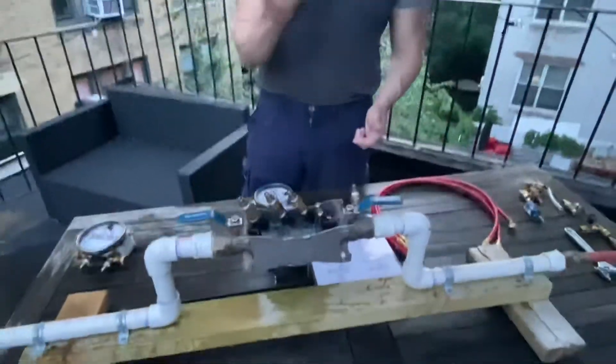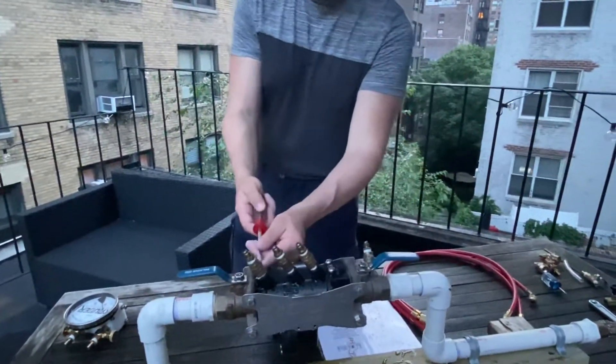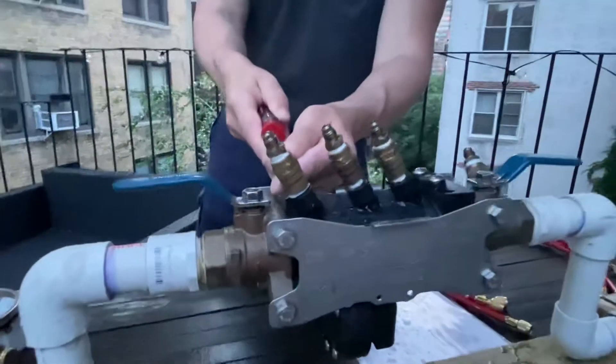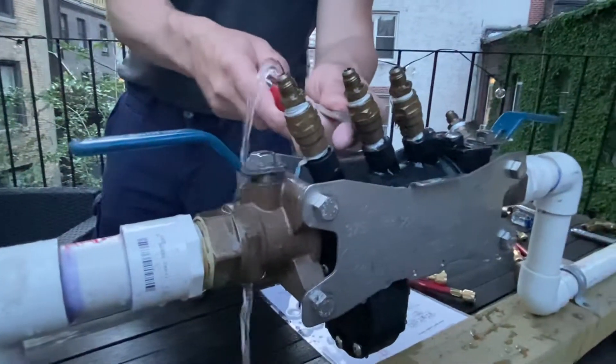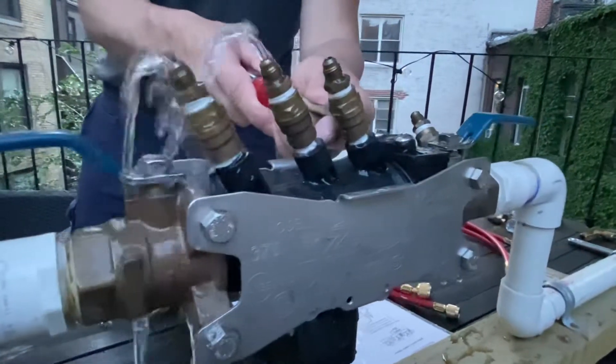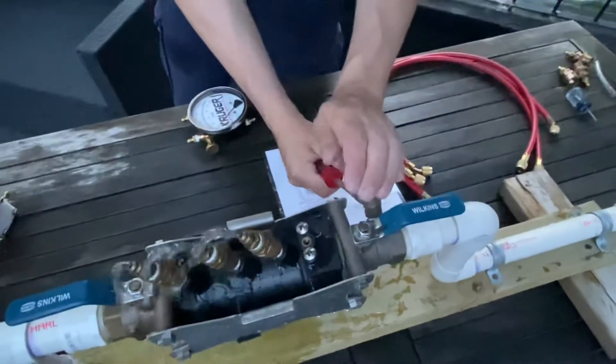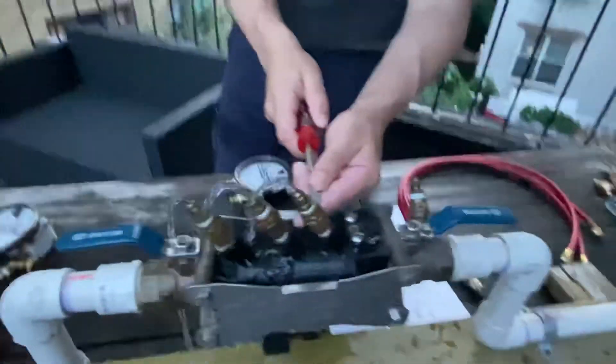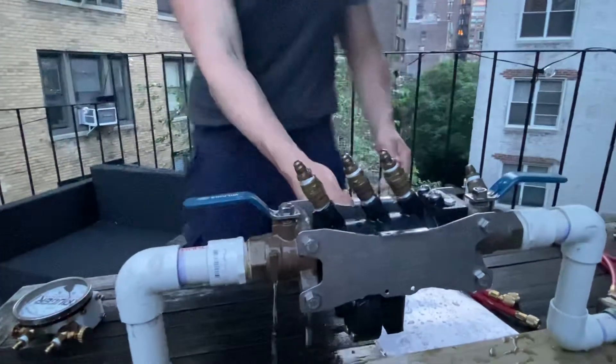We also have a flathead screwdriver to operate the test cocks. So you open test cock four first. The test is to flush the test cocks, so you open four, three, two, one, close one, two, three, four. You do that so you don't jump the relief valve prematurely.